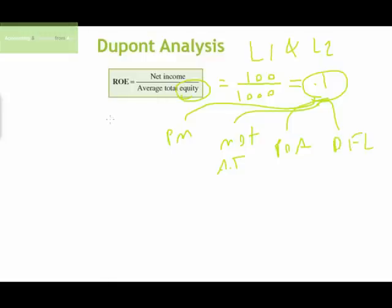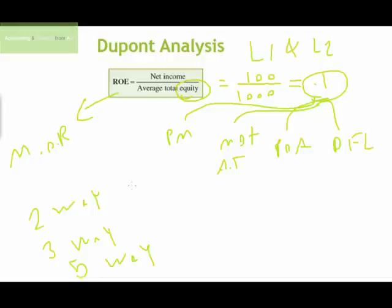Before we decompose return on equity, you'll see why I prefer to call this ratio the 'mother of ratios.' We're going to decompose return on equity using two-way decomposition, three-way decomposition, and five-way decomposition — all driven from DuPont analysis to reveal the secret behind that 10%.